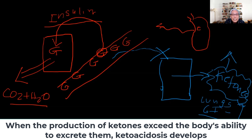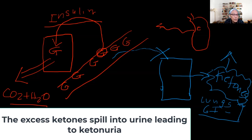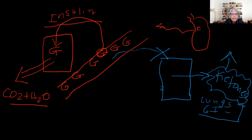There is going to be an accumulation of ketones, which results in ketoacidosis. As a result, you will have ketones in the urine — and that is what is known as ketonuria. The fuel source is no longer glucose; instead, there is a breakdown of fat, which causes an increase in fatty acids that are now utilized for fuel.